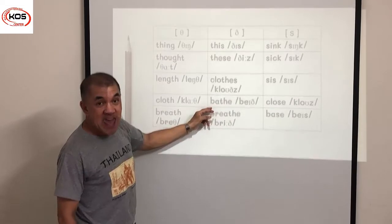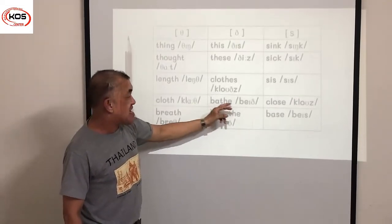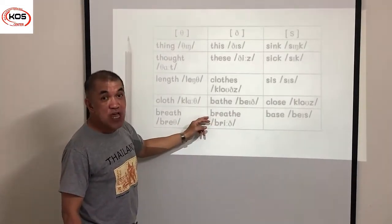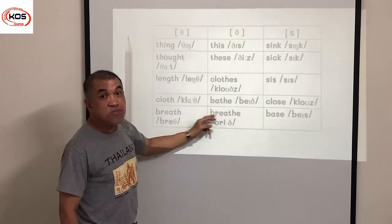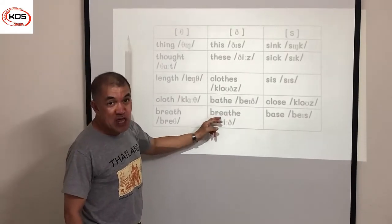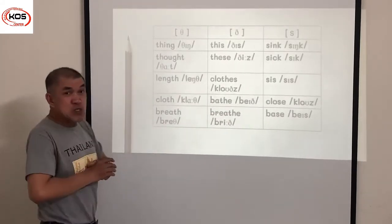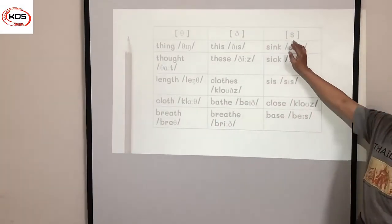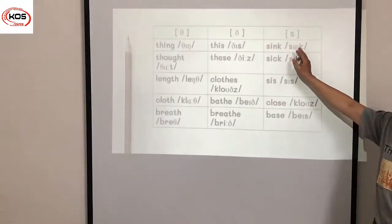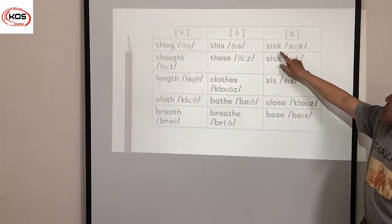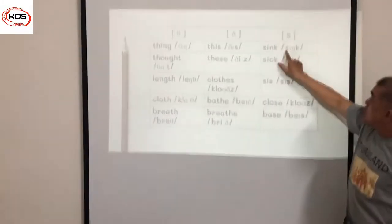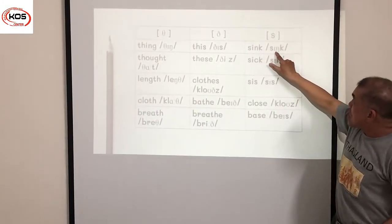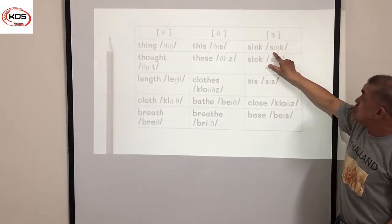Breathe, breathe, breathe. Next, let's have the words for the S sound — this begins with a sibilant sound: sss. I'm going to read the word: sink, sink, sink.